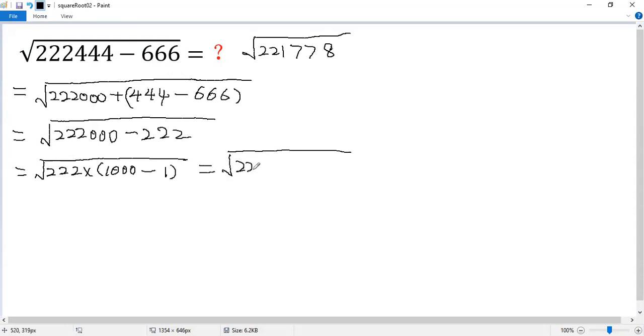So 222 times 1,000 minus 1 equals 999. The first number can be written as 2 times 111. The second, 9 times 111.